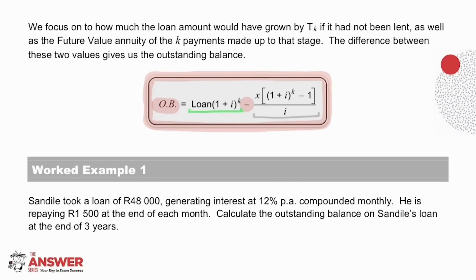It hopefully makes sense then that the earlier in the agreed time period you calculate this difference, the larger the balance outstanding. And if you were to do this calculation over the full time period, the difference between these amounts will be zero, because at this point there will no longer be anything owing on the loan. Let's have a look here at worked example 1 to illustrate how we would use this formula.